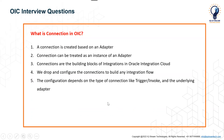The next question is: what is a connection in OIC? A connection is basically created based on an adapter — you can treat it as an instance of an adapter. If you want to connect to any application or technology, you choose the corresponding adapter and use it to create a connection. Connections become building blocks of integrations. When developing an integration, you drop the corresponding connection and configure it to build the integration flow.